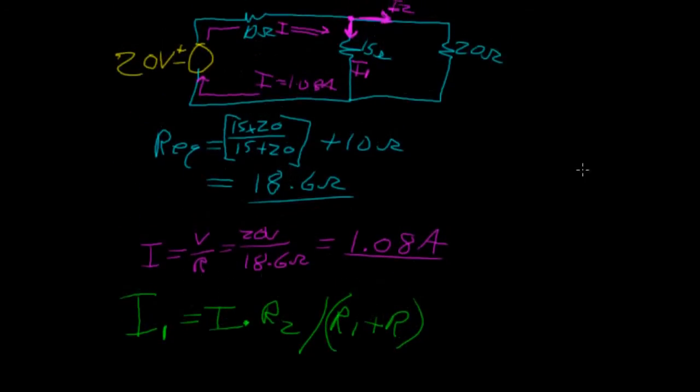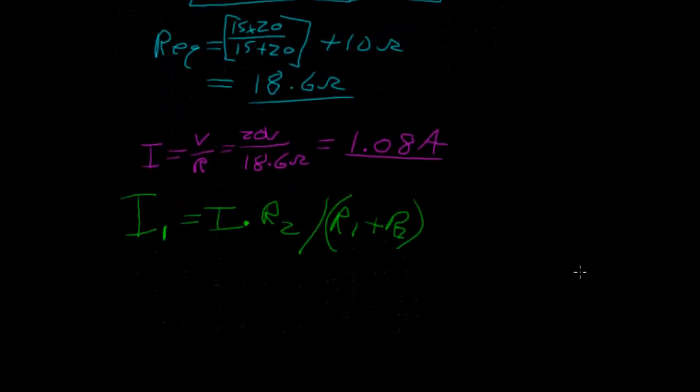So if we want to find the current flowing through the first branch of 15 ohms, we look at the second resistor, which is 20, multiplied by the total current flowing into the branch and divided by the total resistance R1 plus R2. So let's plug in the numbers.